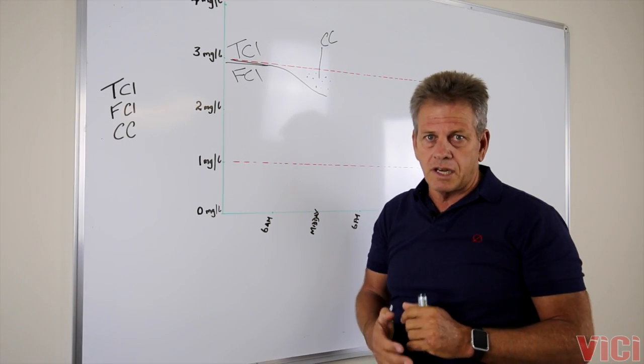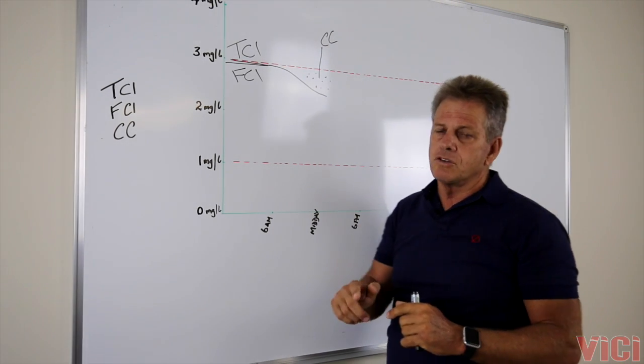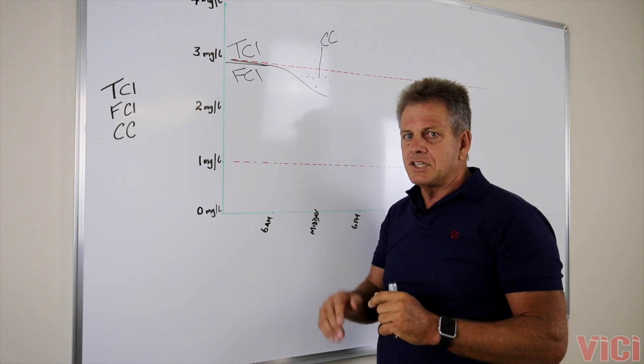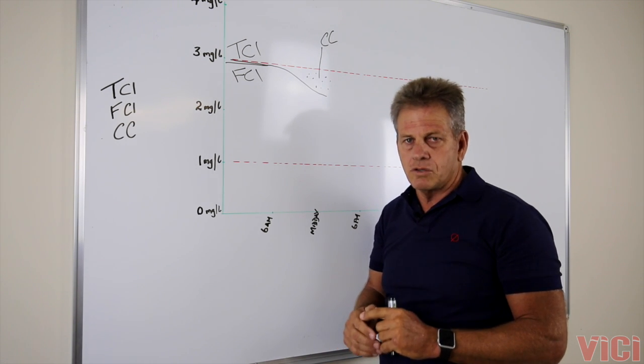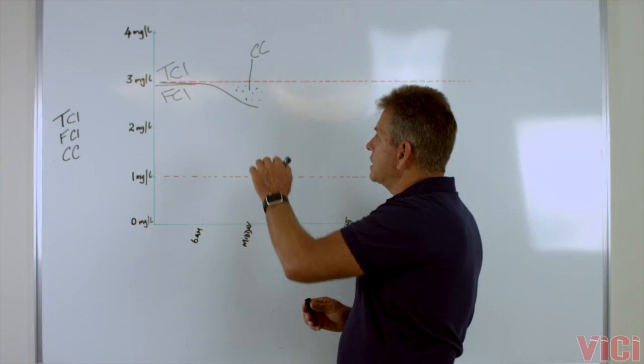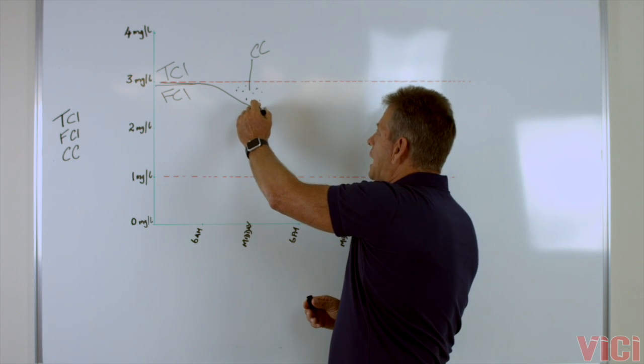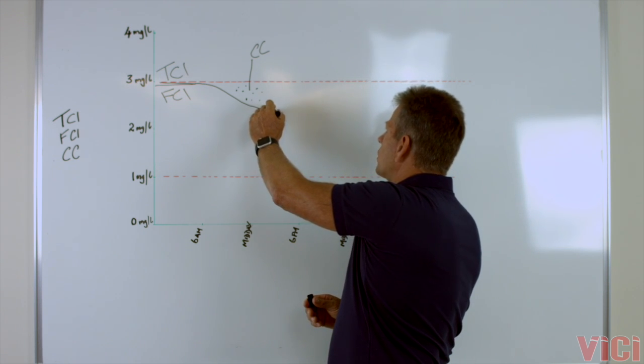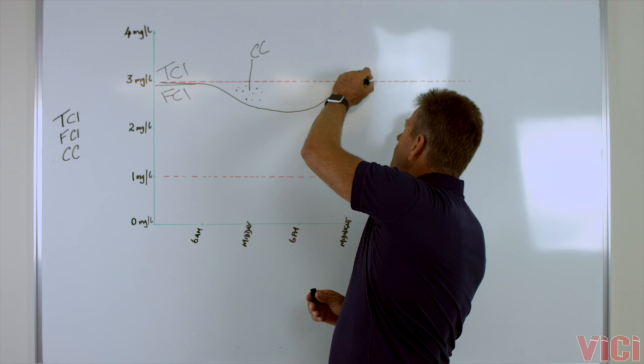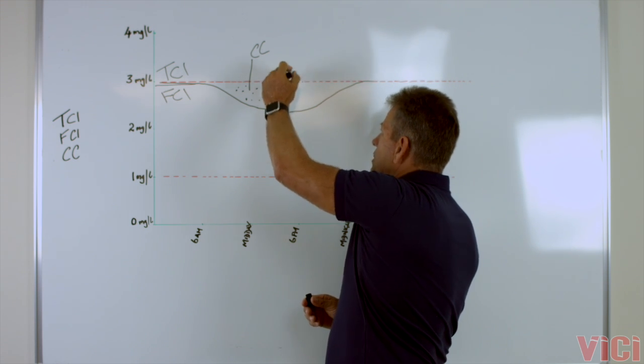Now to get chloramines to leave the pool, what we have to do is we have to inject fresh chlorine to the pool. By injecting fresh chlorine into the pool, the combined chlorine will actually leave the pool as nitrogen gas, as inert nitrogen gas.